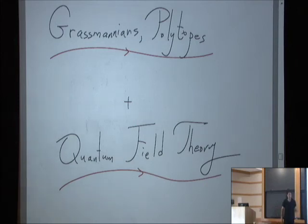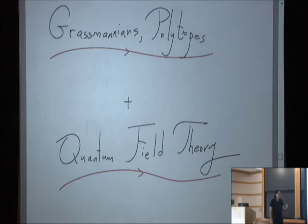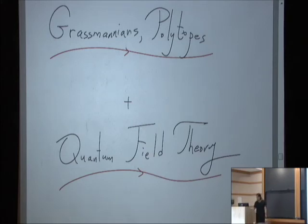Somewhat surprisingly, it's also become clear that there are some remarkable structures sitting in quantum field theory even when the coupling is weak — even in the regime where Feynman and his friends 60 years ago taught us how to think about things. There are now strong reasons to suspect that while what they told us is certainly correct, it's far from a complete picture, and there might be a deeper picture where the notions of quantum mechanical evolution through spacetime are not present, but other mathematical structures are — involving Grassmannians, polytopes, motives, and the theory of polylogarithms.